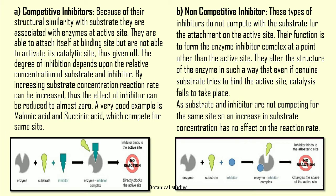Competitive inhibitors, because of their structural similarity with the substrate, are associated with the enzyme at the active site. They are able to attach at the binding site but are not able to activate the catalytic site and are thus given out. The degree of inhibition depends upon the relative concentration of substrate and inhibitor. By increasing substrate concentration, the reaction rate can be increased, thus reducing the effect of the inhibitor to almost zero. A very good example is malonic acid and succinic acid, which compete for the same site.